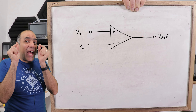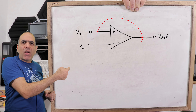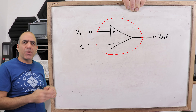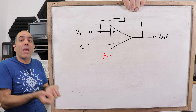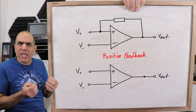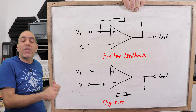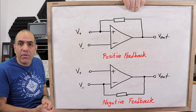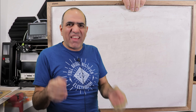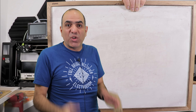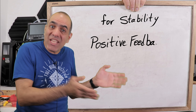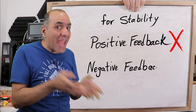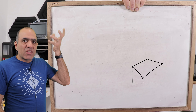What makes op-amps really spicy is when you add feedback to them — where you somehow connect the output of the op-amp to its input. You can connect the output to the positive input (V+) for positive feedback, or the negative input (V−) for negative feedback, or both. Maybe I should have had a video on feedback first, but let's make it simple: for stability — positive feedback bad, negative feedback good.